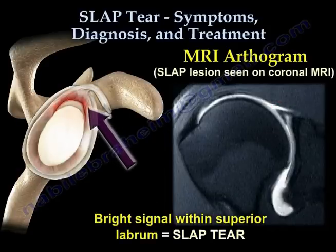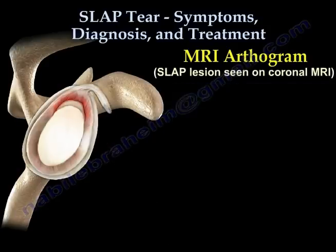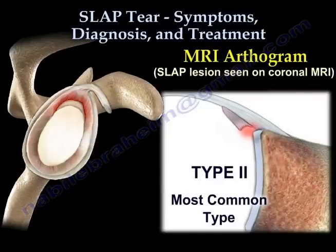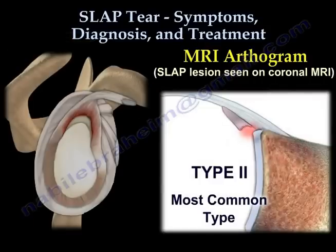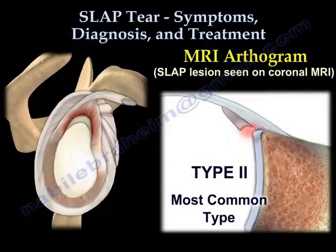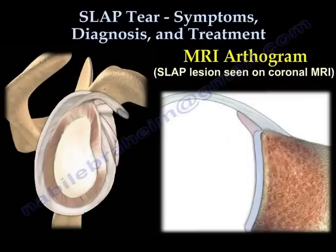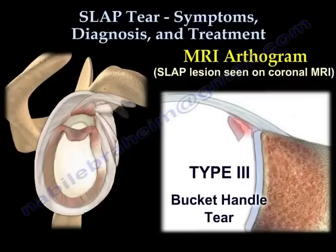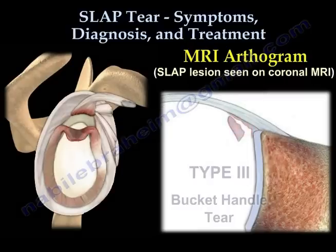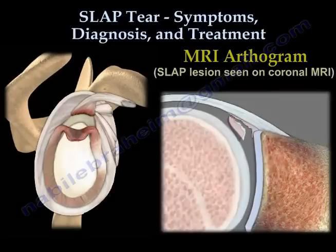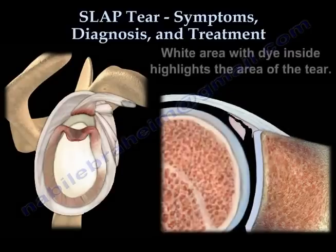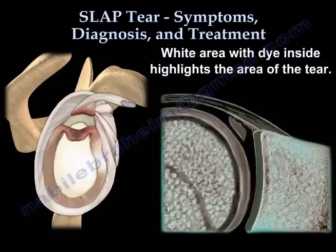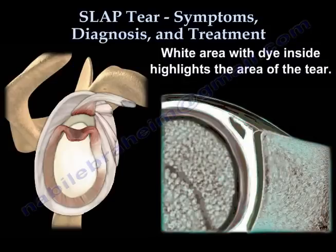Here you can see an example of a type 2 slap tear, which is the most common type. Here you can see an example of a type 3 slap tear, which is a bucket handle tear. The white area with dye inside highlights the area of the tear.